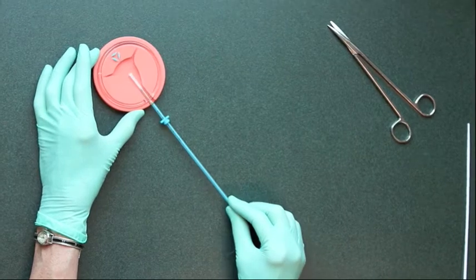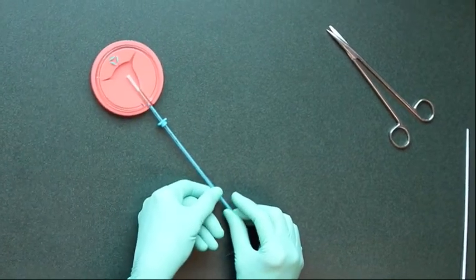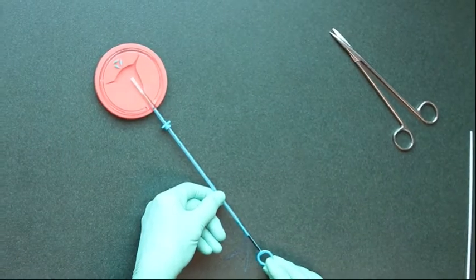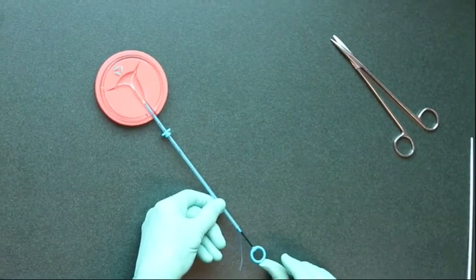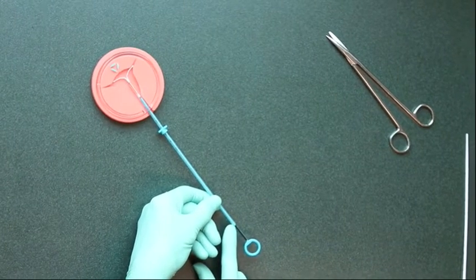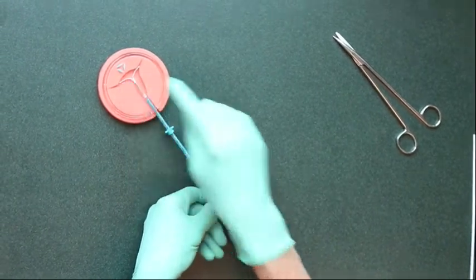Now you can advance the IUD into the uterus, giving yourself a little bit of room so that you can let the arms out. You do that by pushing on the plunger right up to the black mark. That allows the arms to be released.